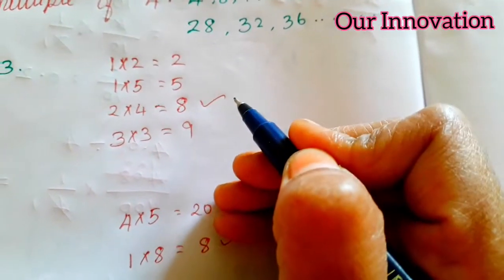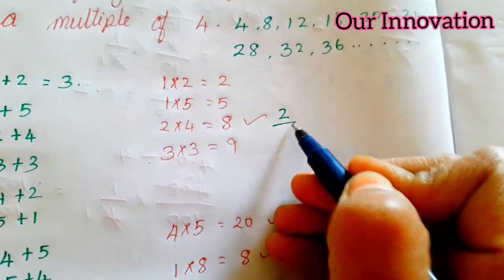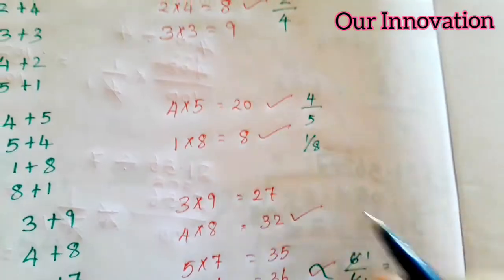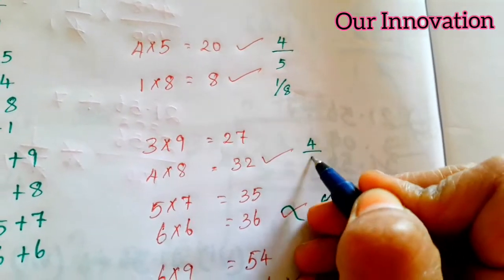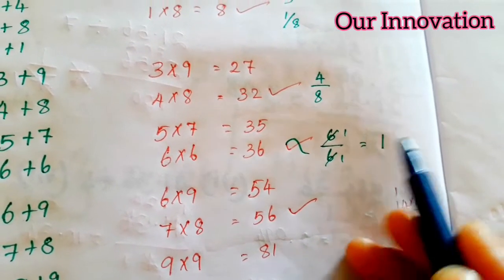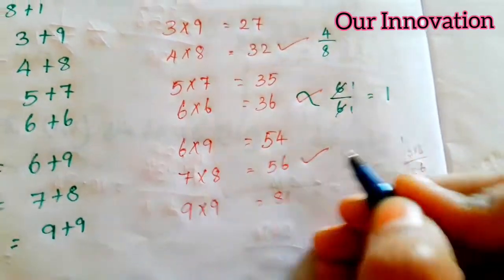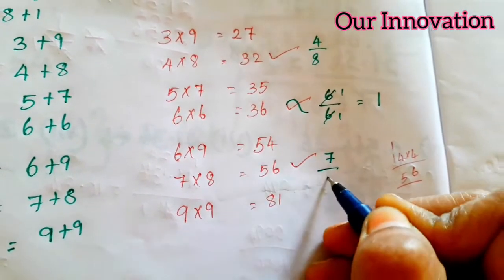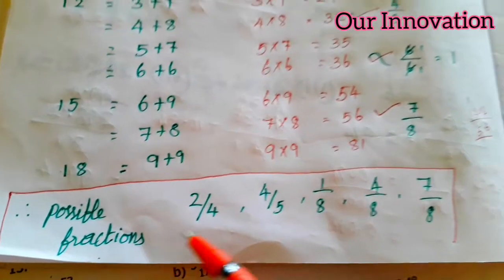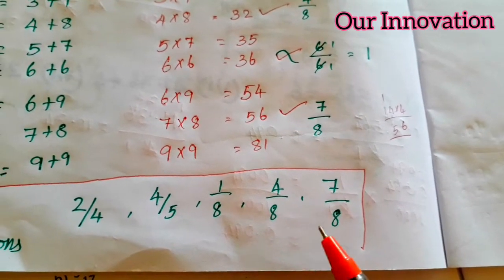So this is the fraction. Students, you have the small number and the key is the greater number. So the fraction is 2 by 4. Next, 4 by 5. This is 1 by 8. Next, 4 by 8 — that means this is 1 by 6. Next, we will see the fraction. This is the small number: 7 by 8. So the small number is the bigger number. Therefore, possible fractions are: 2 by 4, 4 by 5, 1 by 8, 4 by 8, 7 by 8.